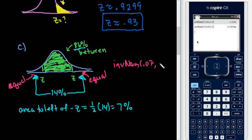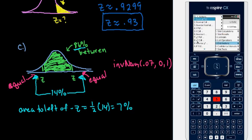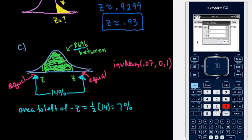And then we would do .07 as our area, 0, 1, and that's what we would plug into our calculator. So again, to get there, it's menu, option 6, statistics, option 5, distributions, and then option 3, the inverse norm.